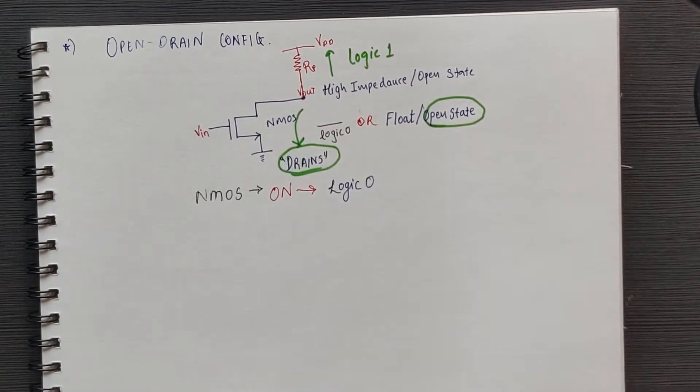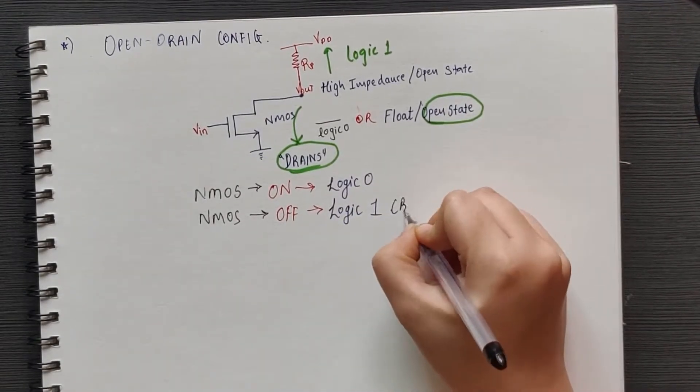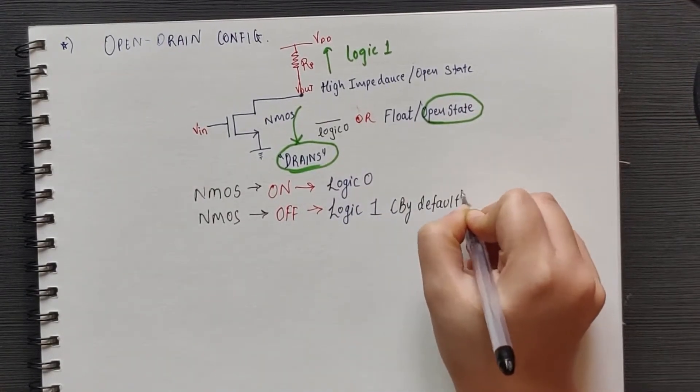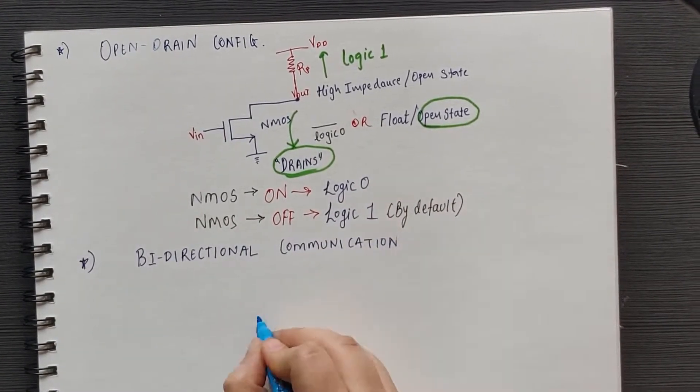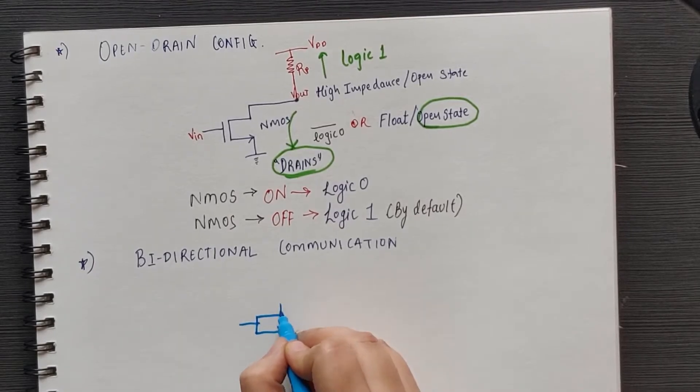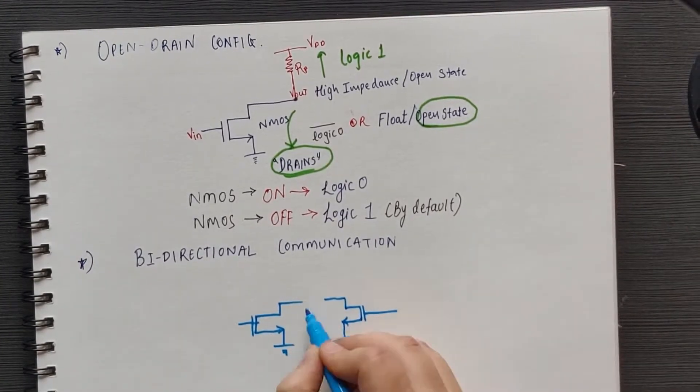Thus, we get logic 0 when NMOS is conducting and logic 1 when it isn't. That is by default. Now for bidirectional communication, we'll connect two open drain outputs together. If one is driving the output low and the other is driving it high,